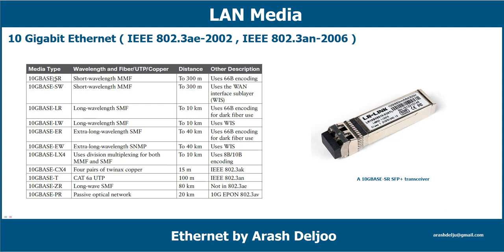Some key 10G media types: 10GBase-SR uses short wavelength (~850 nm), multi-mode fiber (50 or 62.5 micron), up to 300 meters, with 64B/66B encoding. 10GBase-SW is also short wavelength over MMF, up to 300 meters, but uses the WAN interface sub-layer (WIS) for SONET compatibility. Both SR (LAN) and SW (WAN) use short wavelength.